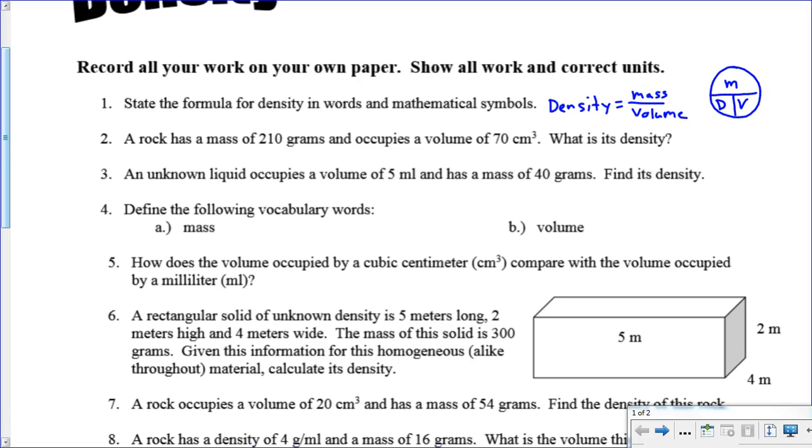The work on this one, you just take 210 and divide it by 70. It's the mass divided by the volume. We do 210 divided by 70 and you get 3 grams per centimeter cubed.